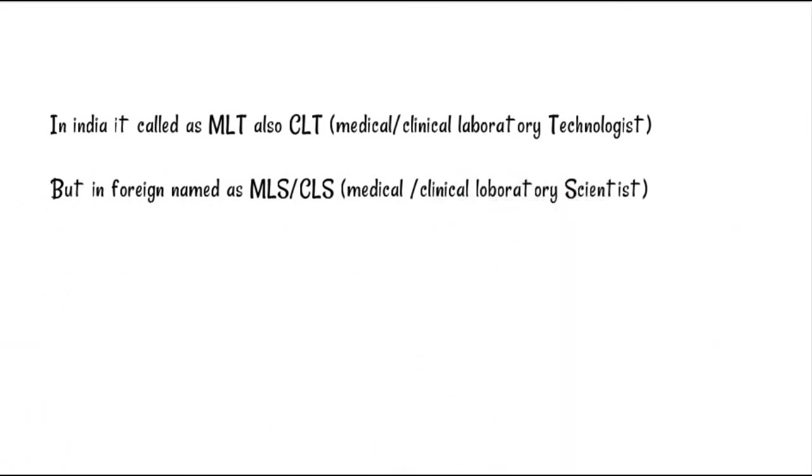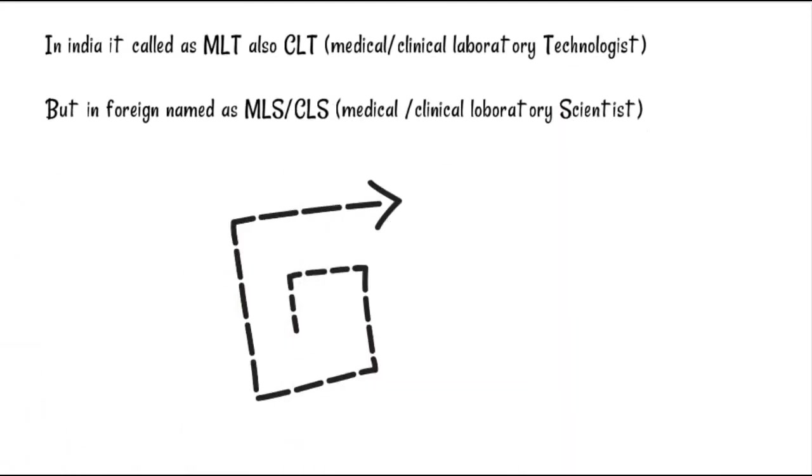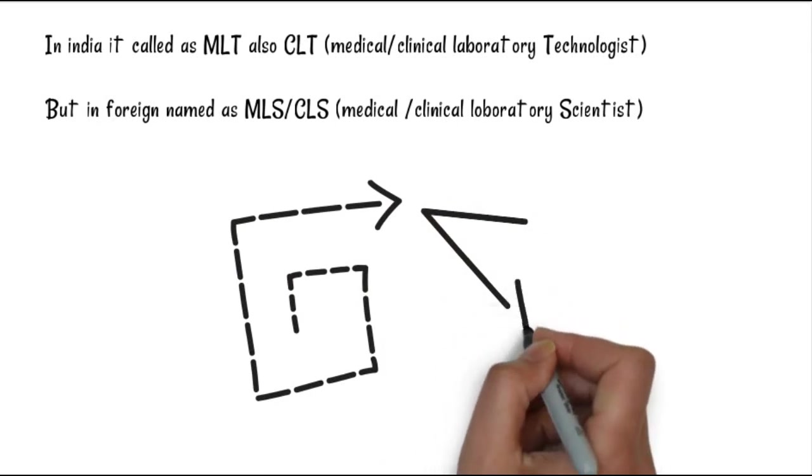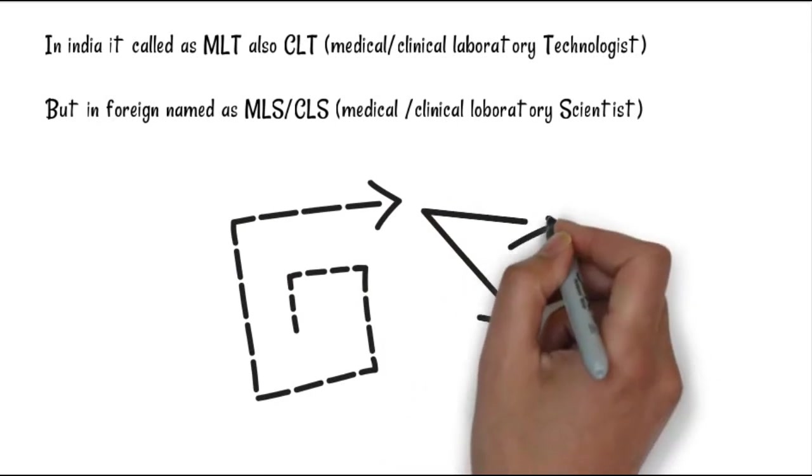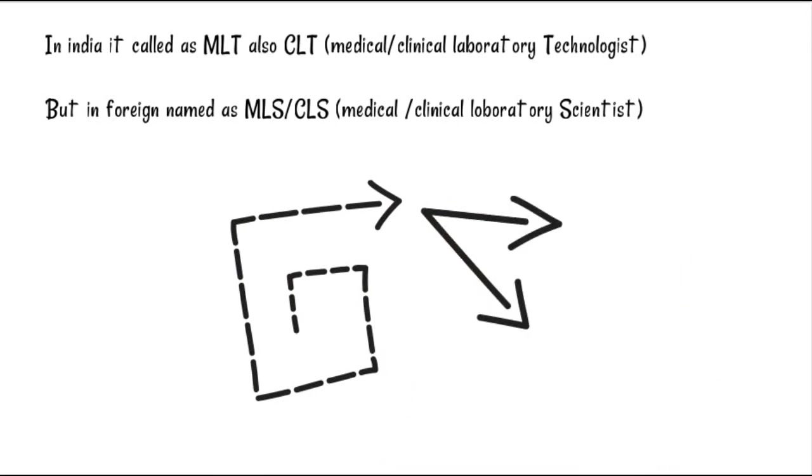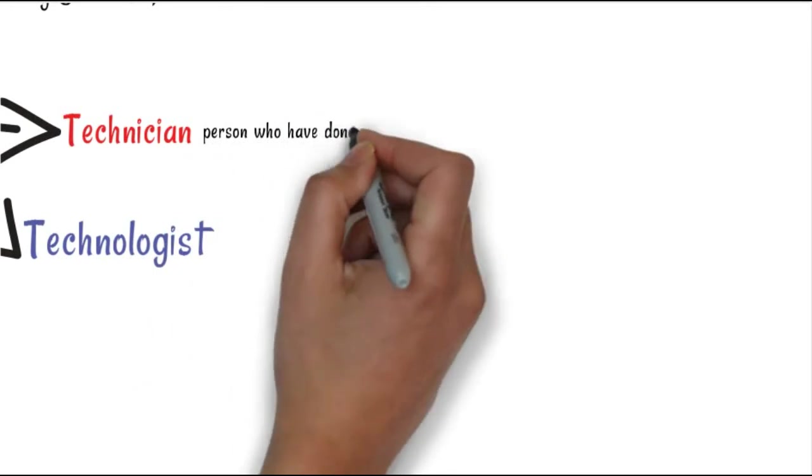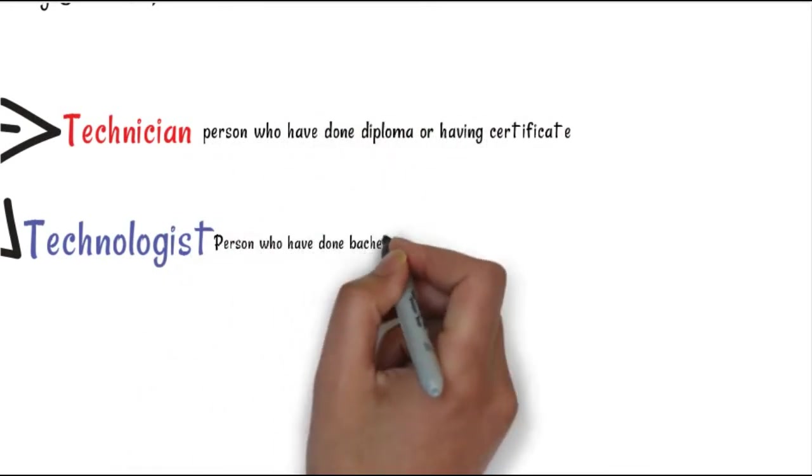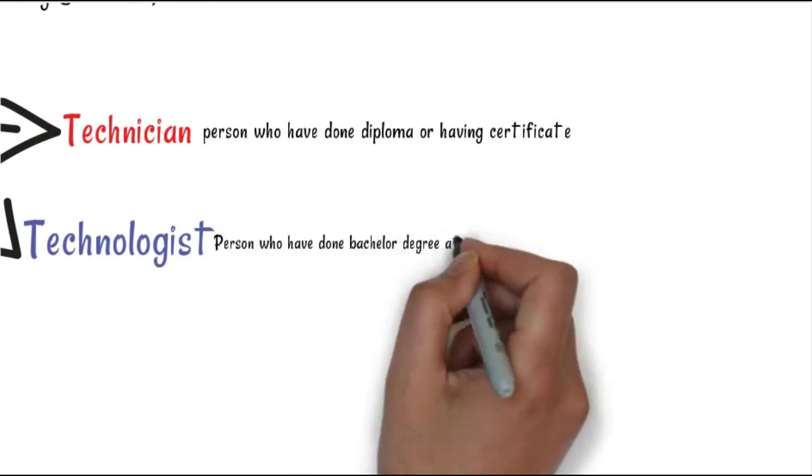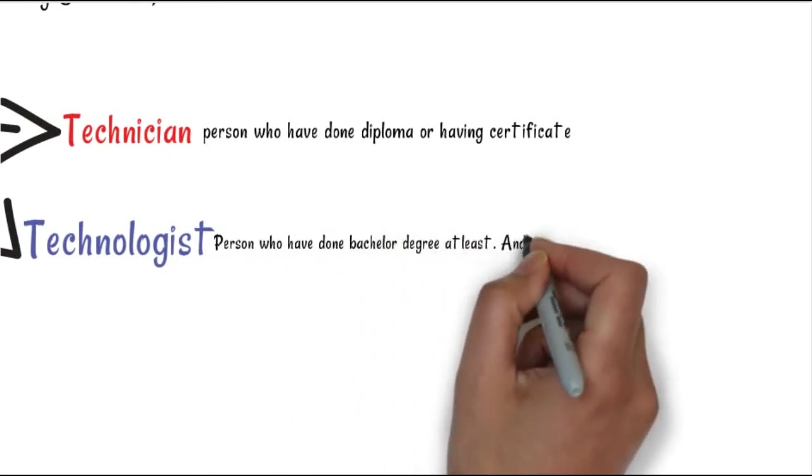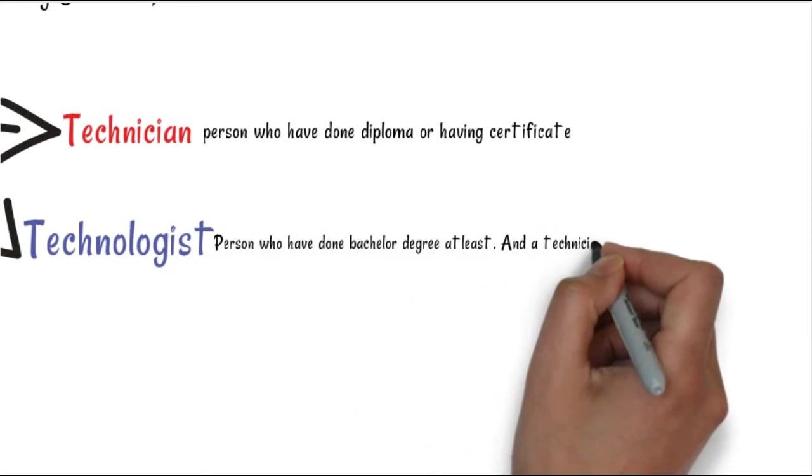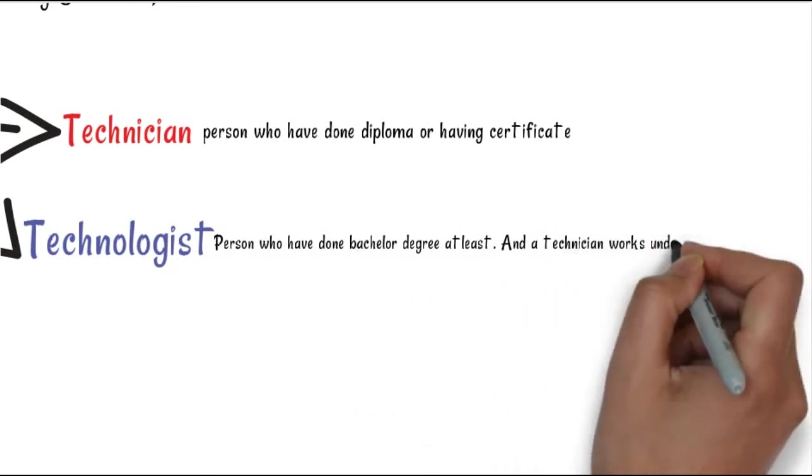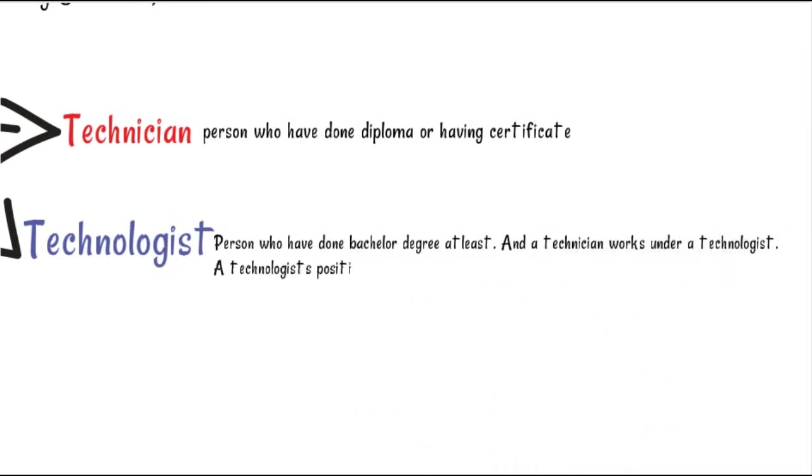But in foreign countries, the name is MLS or CLS - Medical or Clinical Laboratory Scientists. Most people don't know the difference between technician and technologist. A person who has a diploma or certificate comes under technician, but a person having a professional degree is a technologist. Technicians work under technologists - the technologist position is above the technician.